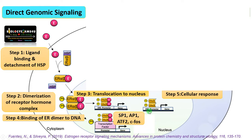So this is the classical estrogen signaling pathway: estrogen binds to the receptor, heat shock proteins detach, followed by dimerization and translocation to the nucleus. The dimer binds to ERE or estrogen response elements to induce transcription of genes, or the ER dimer binds to transcription factors to induce gene activation — both finally causing a cellular response.